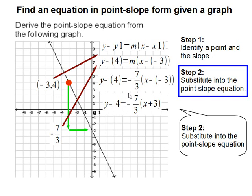Then we simplify our equation. So x minus negative 3 is x plus 3 and y minus 4 is simply y minus 4. And this is our equation in point-slope form.